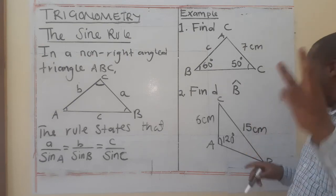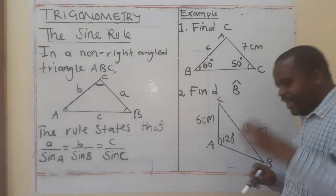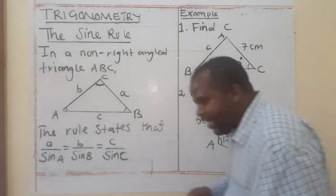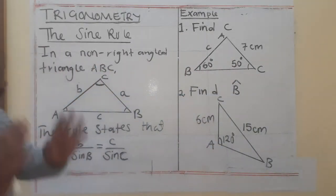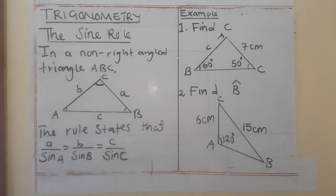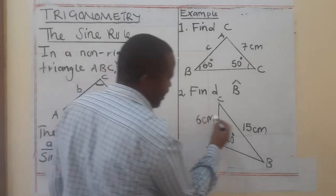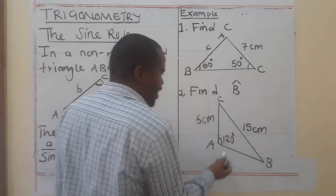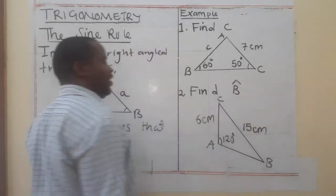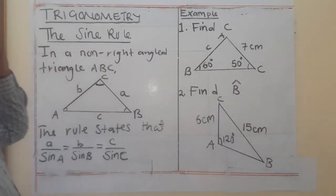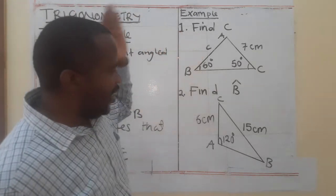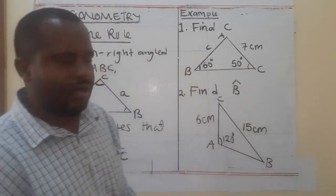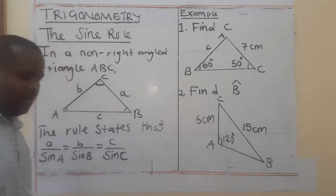The second situation is where you have two sides and an angle. The angle given should correspond to one of the sides given. In these two situations you can find either a missing side or a missing angle.